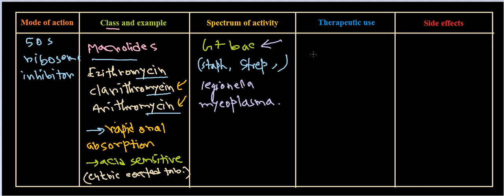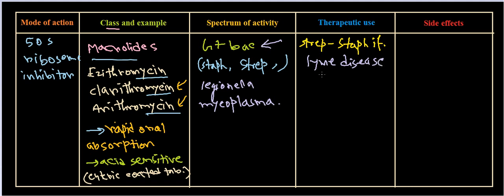The therapeutic uses of macrolides include Streptococcus and Staphylococcus infections. We can also use them in influenza, in Lyme disease treatment, in syphilis, and in some STDs like gonorrhea.